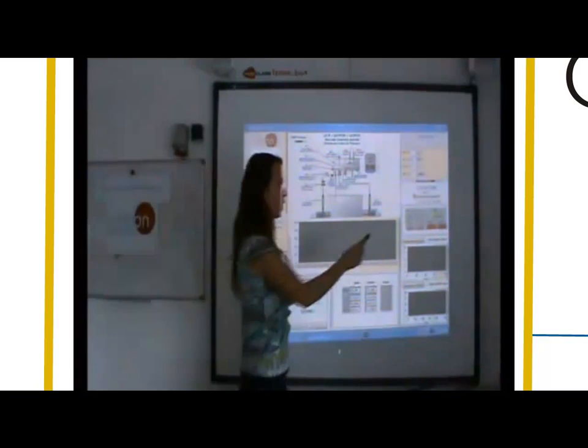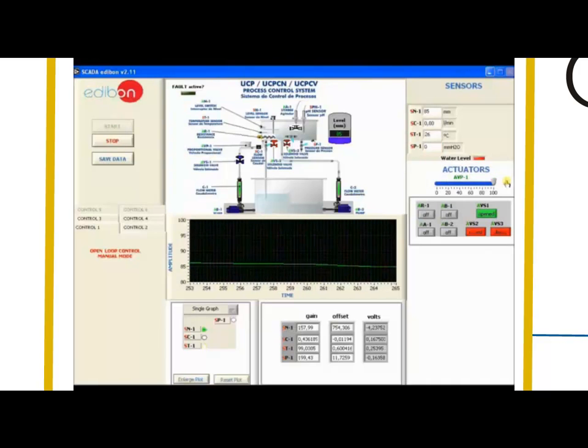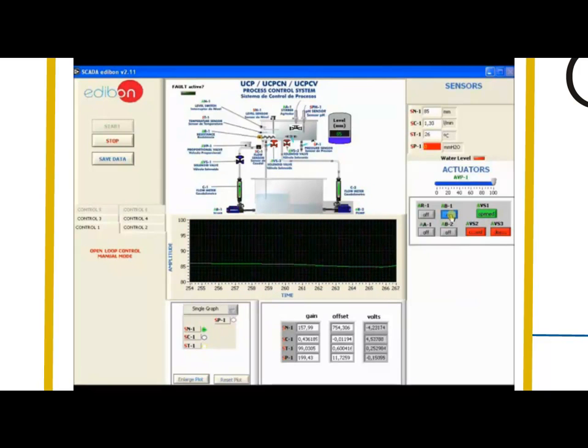For instance, on the UCP unit, we can open up the actuator and turn on the cost. The users can view the level increasing on the graph as well as on the diagram.